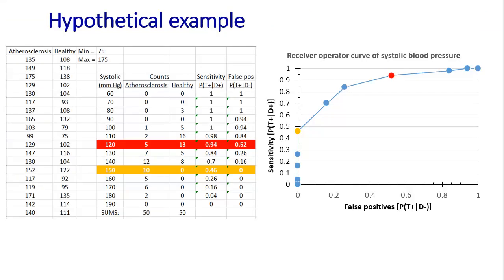I'm now going to show you how to use Excel to create a receiver operator curve using the histogram function built into Excel. I have a hypothetical scenario where we are comparing systolic blood pressure between two populations: one suffering from atherosclerosis, shown in this column, and those who do not have the condition, labeled healthy in this column. I use the histogram function to create a frequency distribution table. From that table, one can calculate sensitivity and false positives, and then the receiver operator curve is a line graph of false positives versus sensitivity.